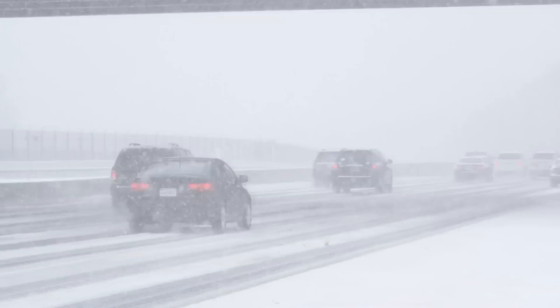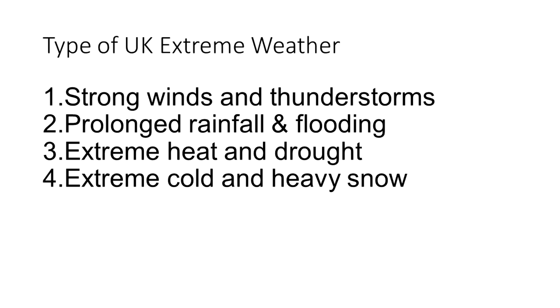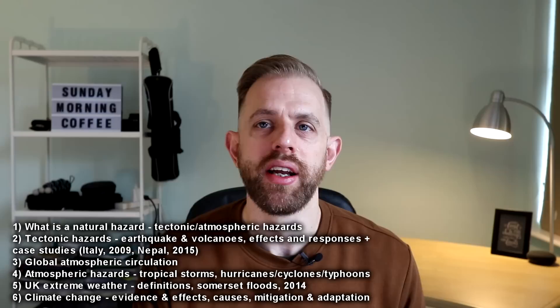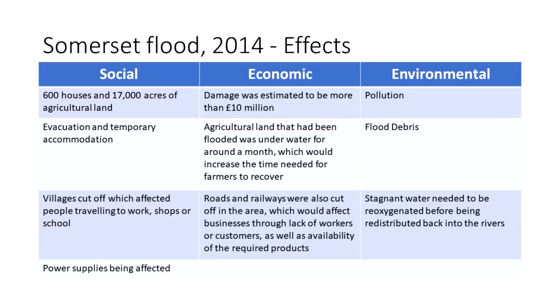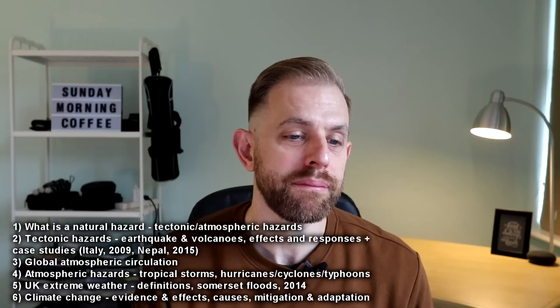UK extreme weather is another topic you need to understand well. We don't get hurricanes, tornadoes, or strong earthquakes very often in this country, so we're talking about extreme heat waves, droughts, snow, cold weather, and storms. You need to understand how we are affected by extreme weather in the UK. We looked at the Somerset floods from 2014 as our example — and you need to know the specifics: who was affected, how many people, and how the area responded.